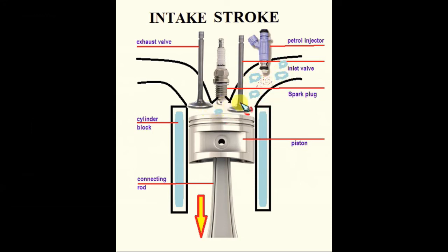Briefly, this is the activity that happens in the intake stroke. This diagram shows the second stroke in the cycle, named the compression stroke.